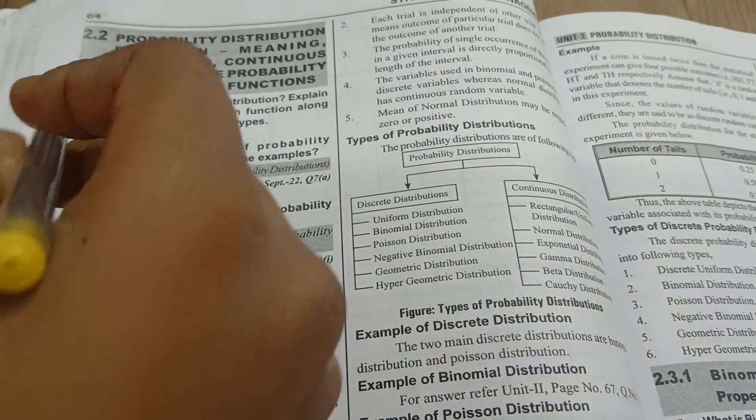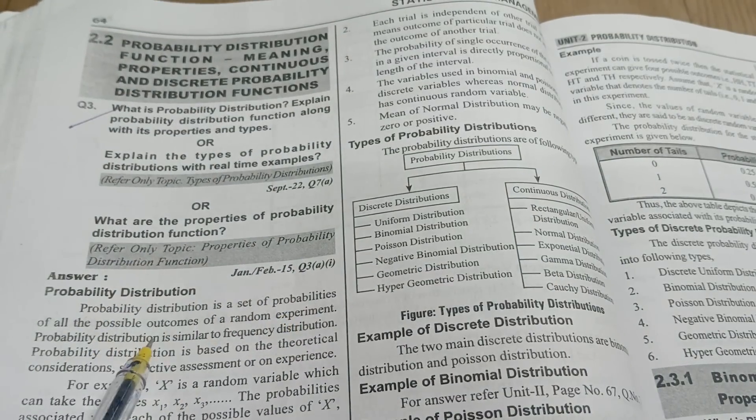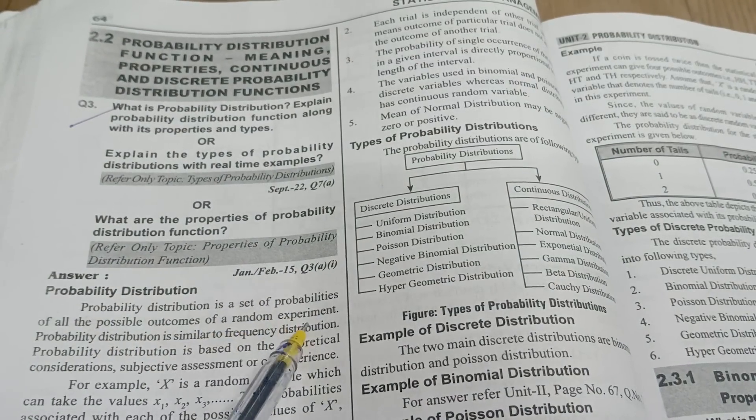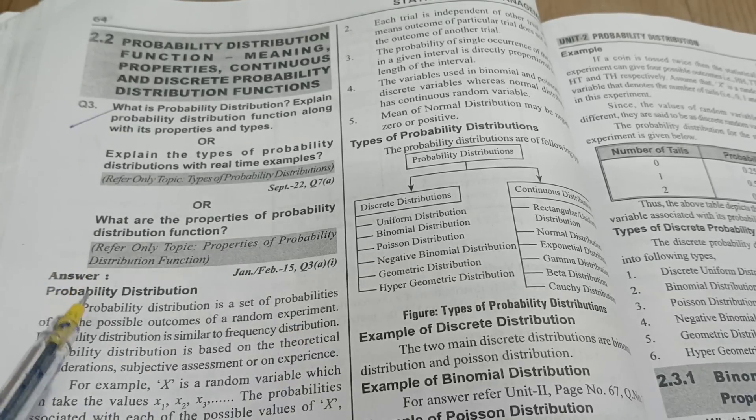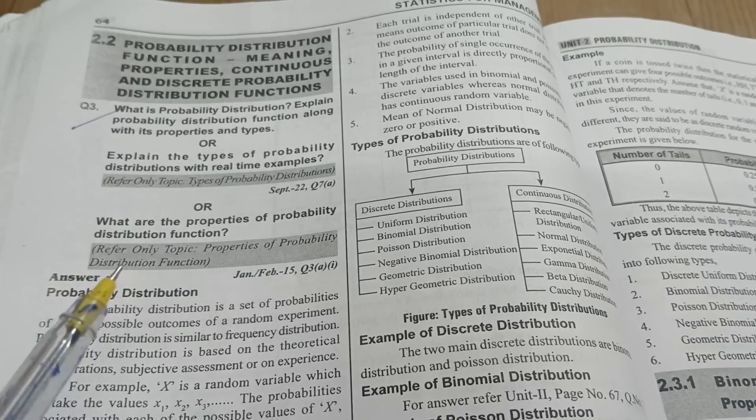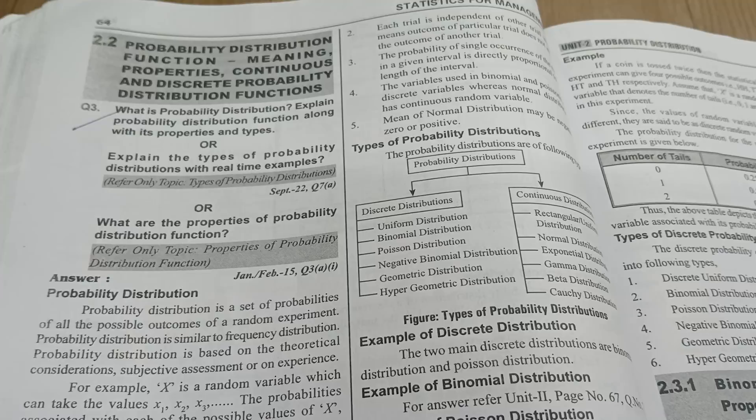Probability distribution is a set of probabilities of all the possible outcomes of a random experiment. In that experiment, what are the probabilities? What are the terms which will get the outcomes, the possible outcomes you will get? Probability distribution is nothing but probabilistic in nature; it will have the possible outcomes in a random experiment.